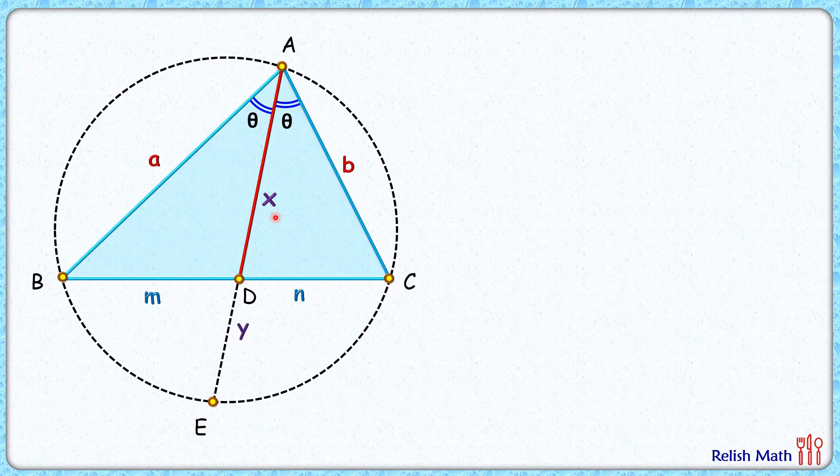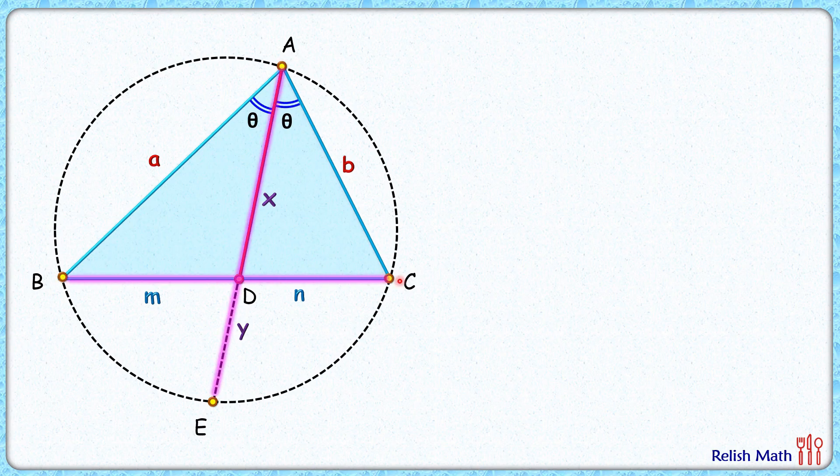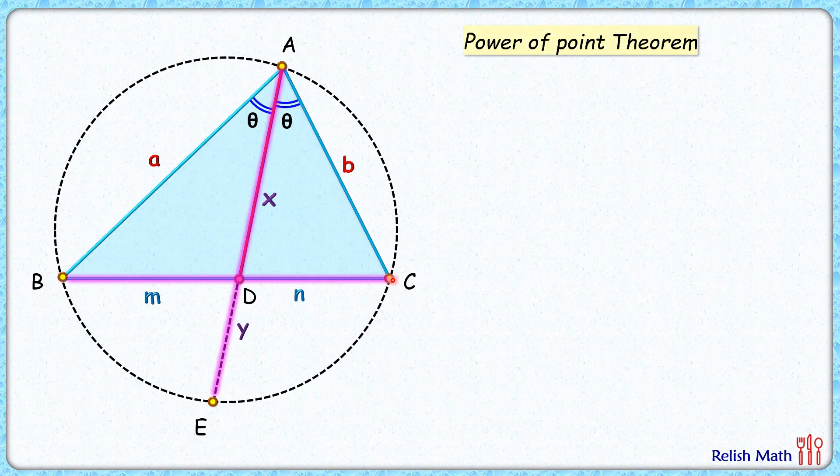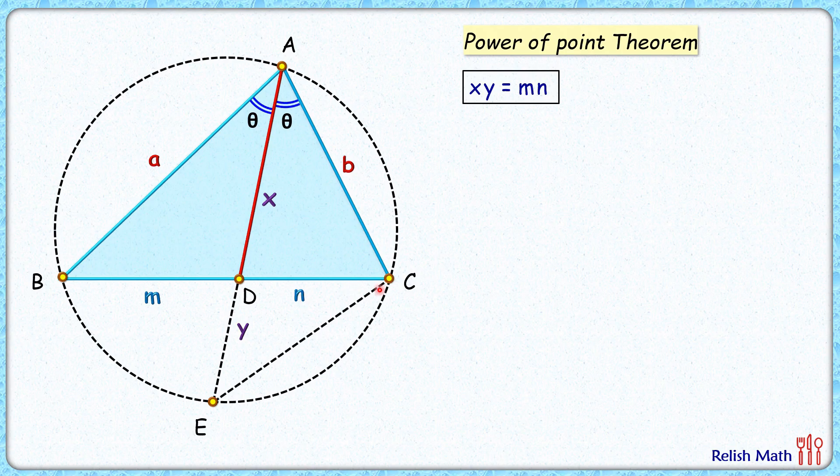With respect to the circle, we have got these two chords which are intersecting at point D. Applying power of point theorem, we'll get x times y equals m times n. Let's do one more construction: join CE.